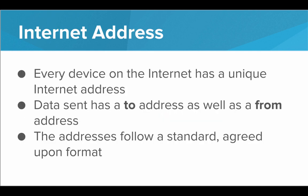Internet addresses are very similar. Every device on the internet has its own unique internet address, just like every home or building has its own unique mailing address. When we are sending data across the internet, that data has a to address as well as a from address — just like when you write a letter, you need to write down the address you're sending it to, and you need to write down the address it's from so that the person who receives it knows who to respond to. And lastly, the addresses follow a standard, agreed-upon format. If everyone agrees to write out these addresses in a particular way, then everyone will be able to read them and understand what location it's actually referring to.